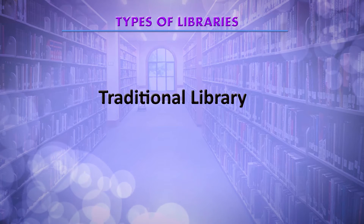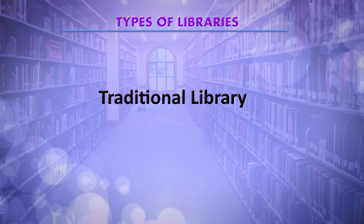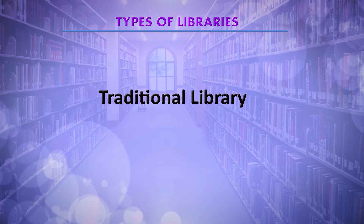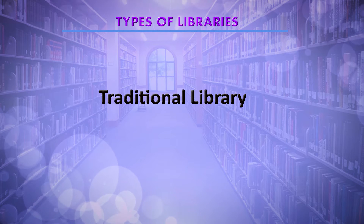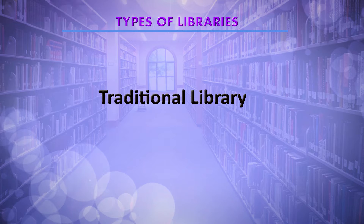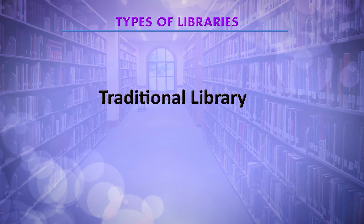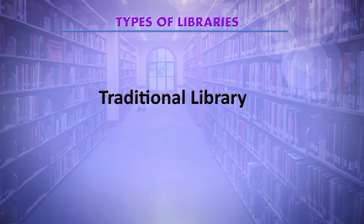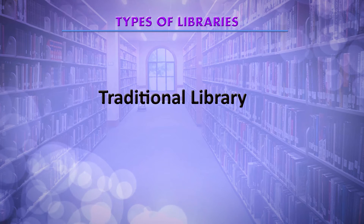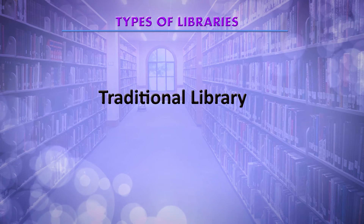Here the types of library are based on the collection — when I say collection, the type of material of the collection. When we talk about traditional library, traditional libraries are those libraries that have print material as their information source, or typically a traditional library is a library that has been around for a very long time and has printed books, magazines, journals and so forth as its collection.